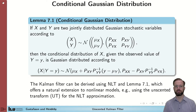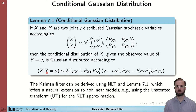To be able to derive the measurement update, we also need to recall Lemma 7.1, the one about conditional Gaussian distributions. It states that if x and y are two jointly distributed Gaussian stochastic variables distributed according to a given mean and covariance, then we can find the conditional distribution of x given y with a specific expression. You should recognize this as part of the measurement update in the normal Kalman filter.